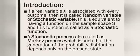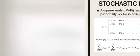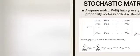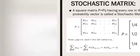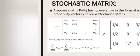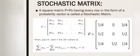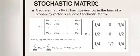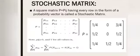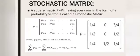Coming to the definition of stochastic matrix: a square matrix P = Pij having every row in the form of a probability vector is called a stochastic matrix. For example, P matrix equals [1/4, 0, 3/4; 1/2, 0, 1/2; 1/4, 1/2, 1/4], and the sum of elements in each row corresponds to the value equals to 1.